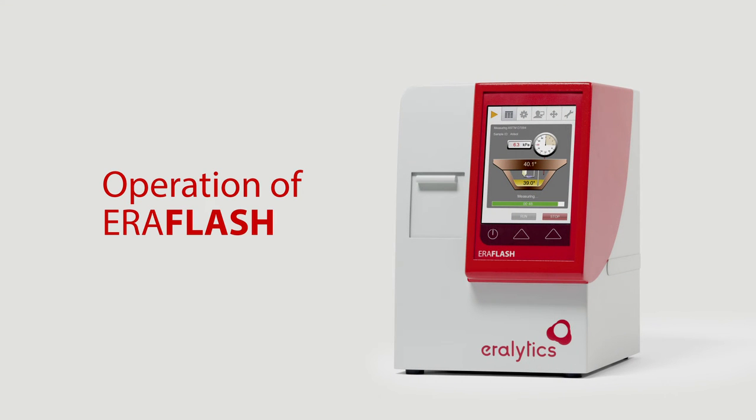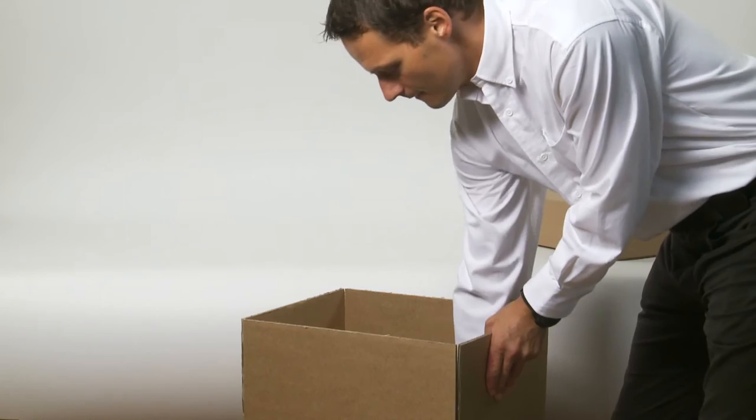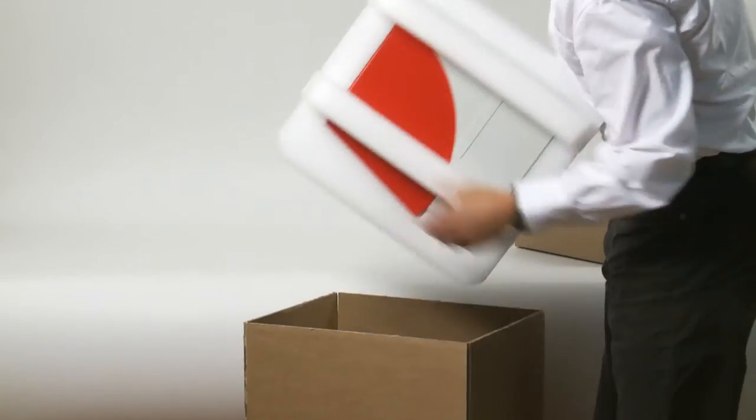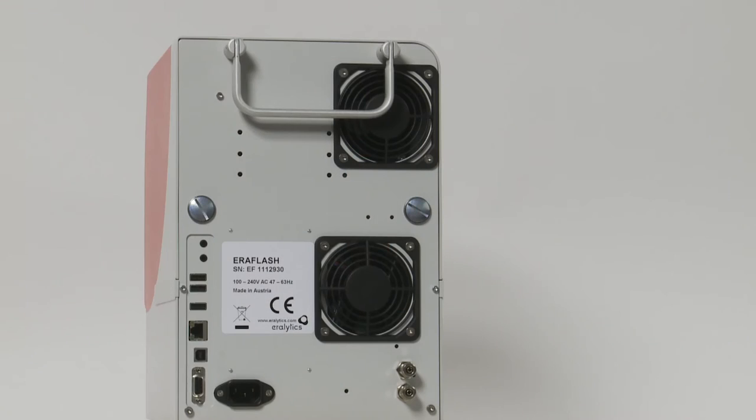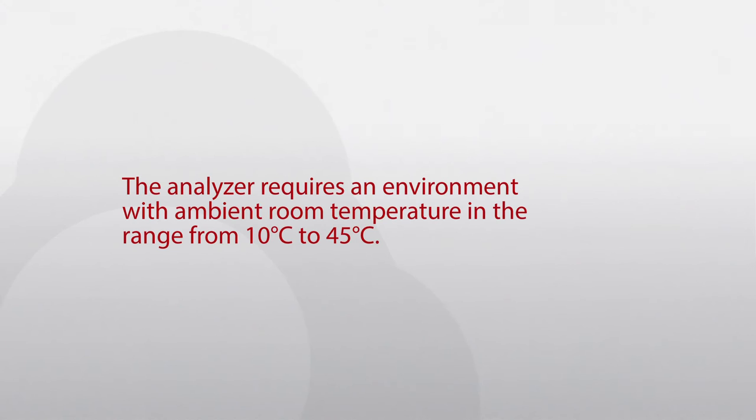Operation of Error Flash setup. After unpacking, place the instrument on a stable bench top, making sure the vent holes of the analyzer are not obstructed. The analyzer requires an environment with ambient room temperature in the range from 10 to 45 degrees Celsius.